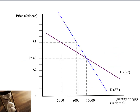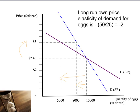So now we've put some numbers on here. The price of eggs still goes from $2.40 up to $3. But while in the short run, quantity only dropped from 10,000 to 8,000, in the longer run it drops from 10,000 to 5,000. This means that on our long-run demand curve, the percentage change in quantity is now 50%. The price change is still 25%. So our long-run elasticity of demand is minus 50 divided by 25, or minus 2. Our long-run demand curve is elastic — it has an elasticity of demand of minus 2 — compared to our short-run demand curve, which had an elasticity of minus 0.8 and was significantly less elastic.